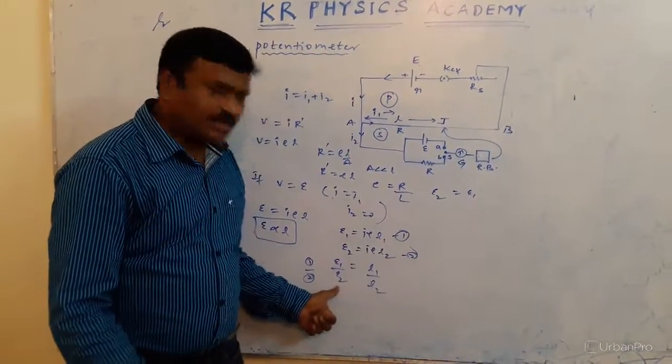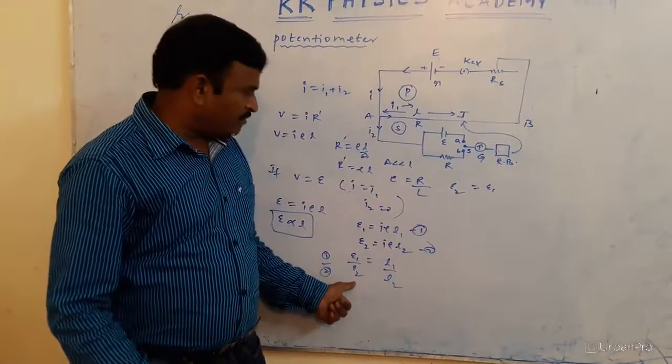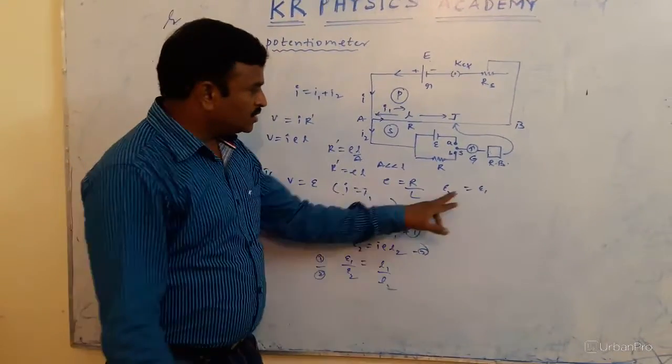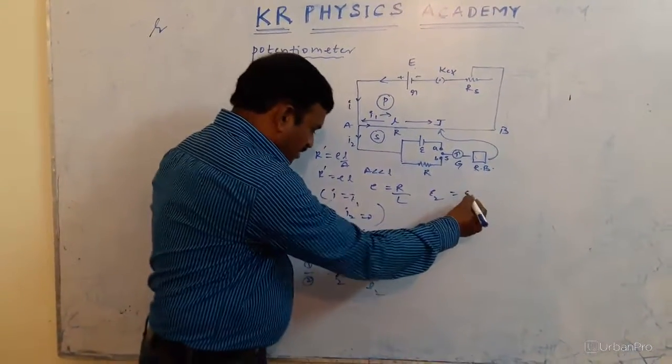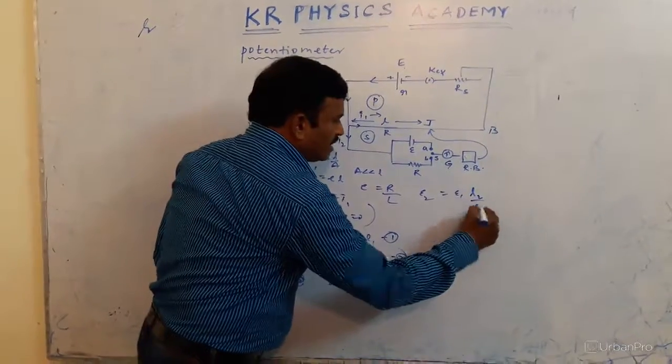Where E2 is unknown EMF of a given cell. To determine that one, E2 equals E1 into L2 by L1.